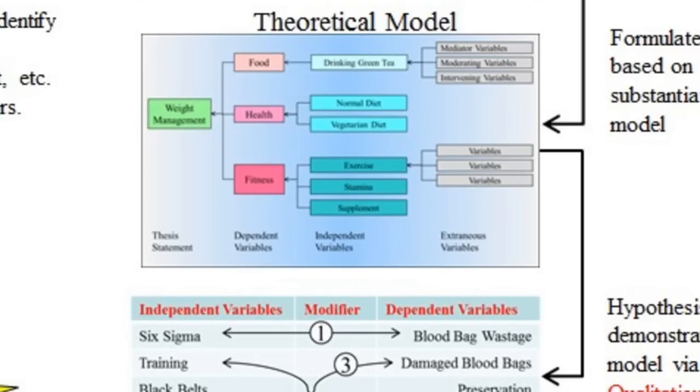Explanatory theories specify relationships among the dimensions of individuals, groups, situation, or events. Explanatory theories are tested by correlational research.